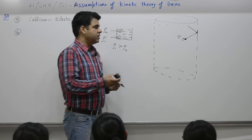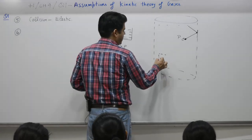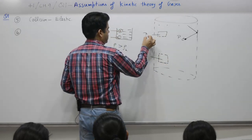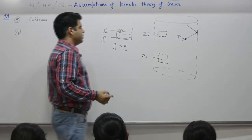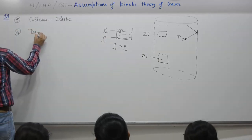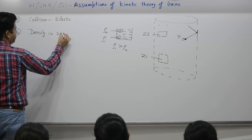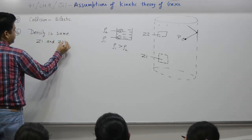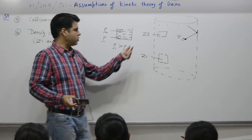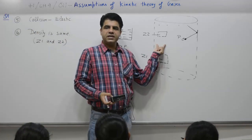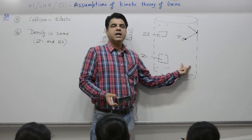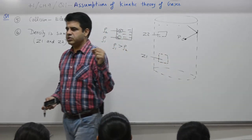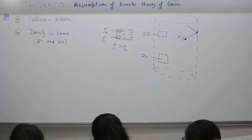Similarly for gases also, in zone 1 and zone 2, you will assume density is same in zone 1 and zone 2. That means density is same throughout. You talk of any volume, 1 liter gas here, 1 liter here, 1 liter here, any point 1 liter will have same mass. So density remains the same. This is point number 6.